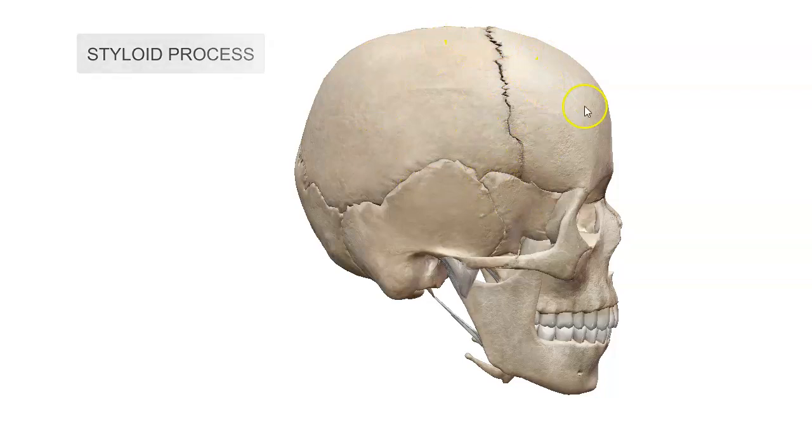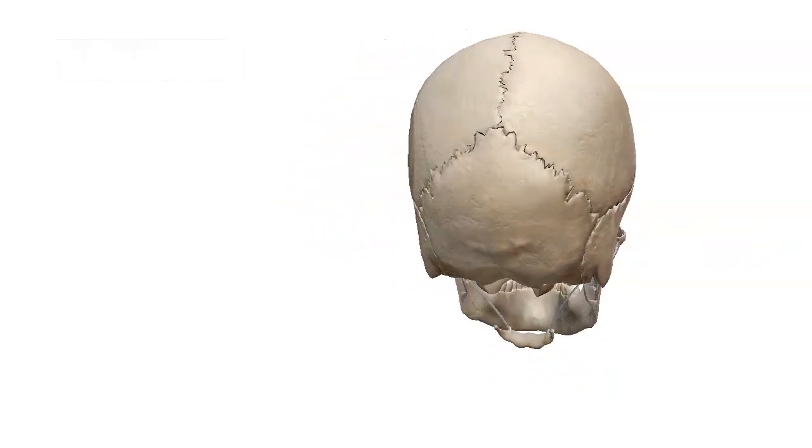Coming back to the top of the skull, we have the frontal bone, parietal bone, temporal bone, and the base of the skull is called the occipital bone.